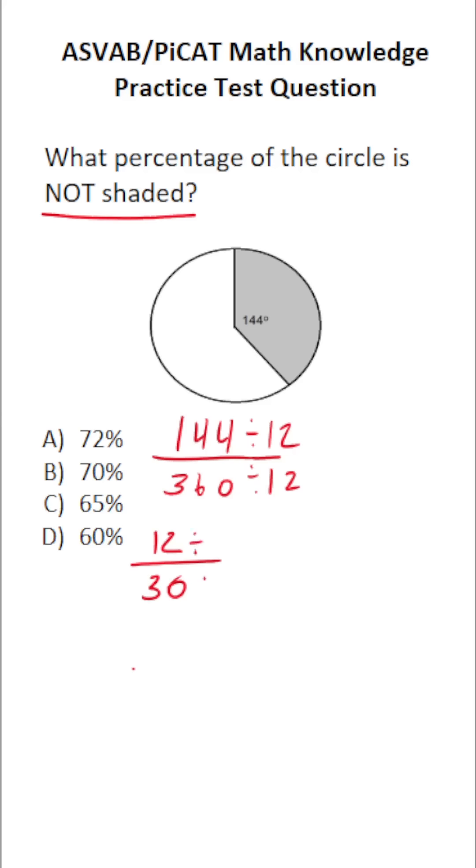And we can reduce this by a common factor of 3. 12 divided by 3 is 4. 30 divided by 3 is 10. So 4 tenths of the circle are shaded. How can we figure out what fraction of the circle is not shaded? Well, we can do some subtraction here.